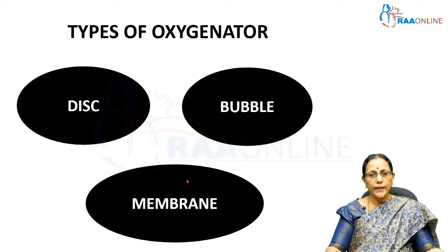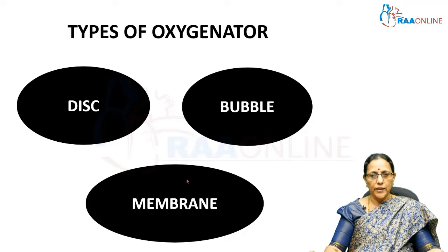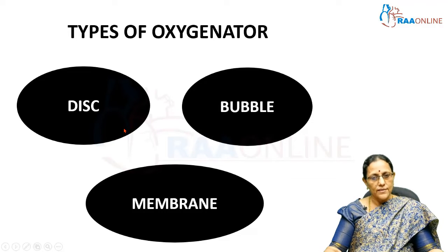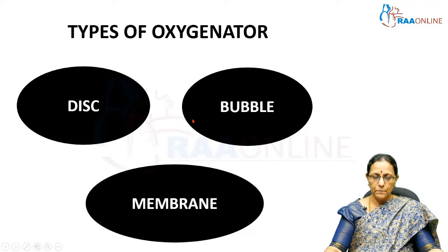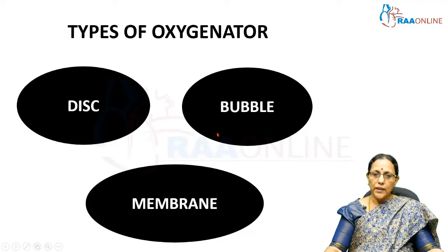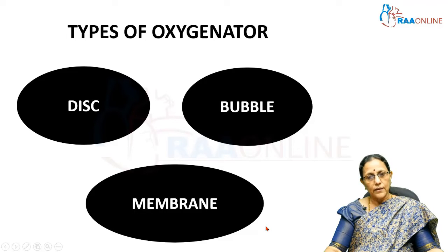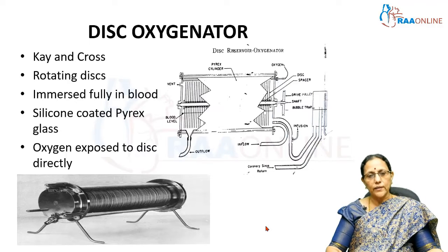Looking at the types of oxygenators from the history of their origin: initially they were using the disc oxygenator. Due to certain disadvantages, the next generation — the bubble oxygenator — came into existence. Nowadays, after the bubble oxygenators, even more advanced oxygenators, the membrane oxygenators, are currently used.